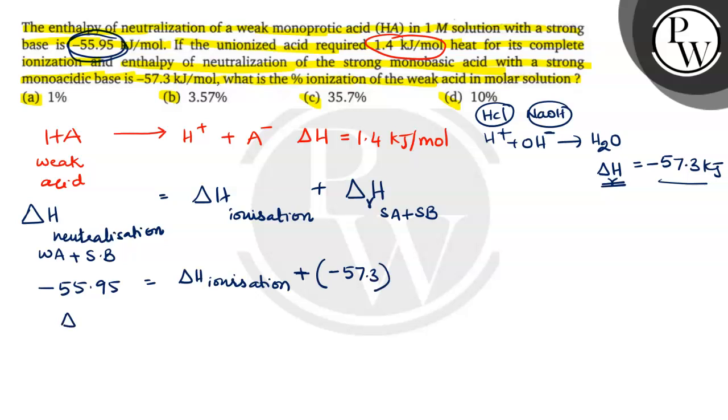So, on solving we get delta H ionization. So, that is 1.35 kilojoules per mole. Okay?